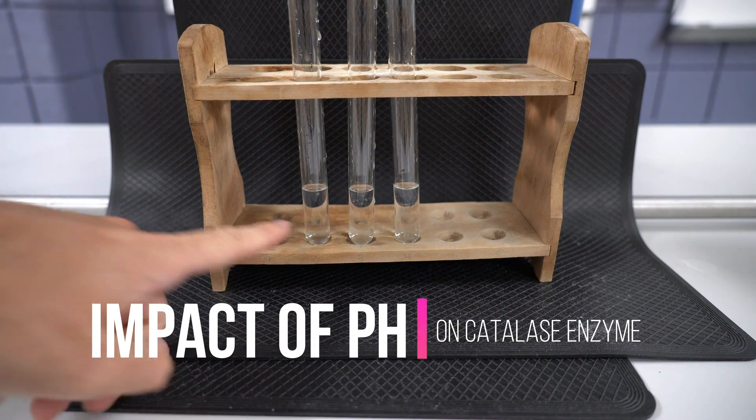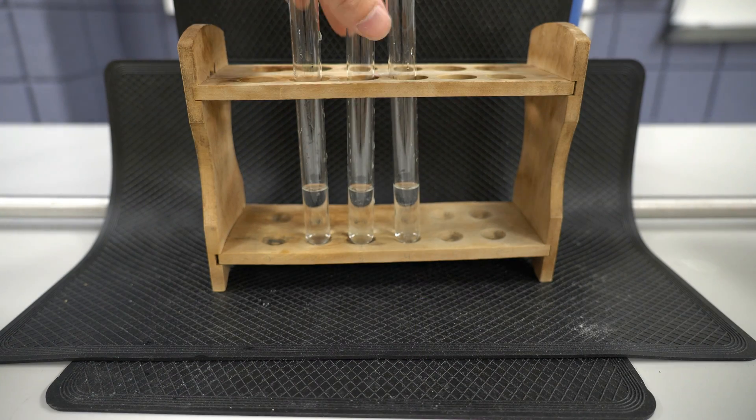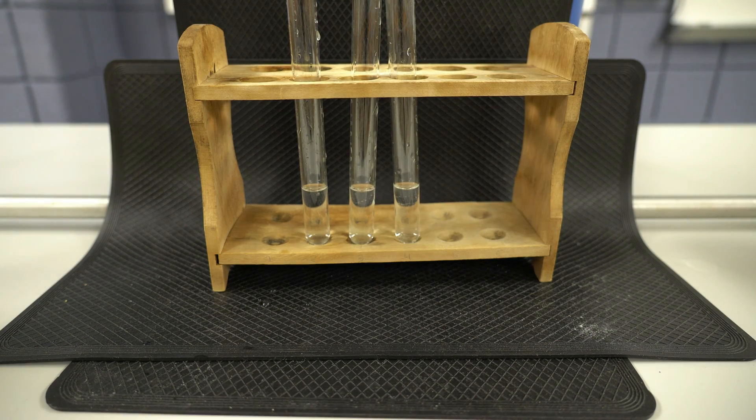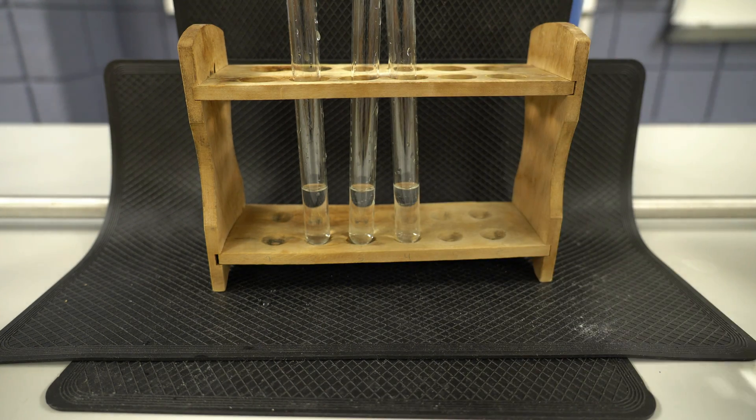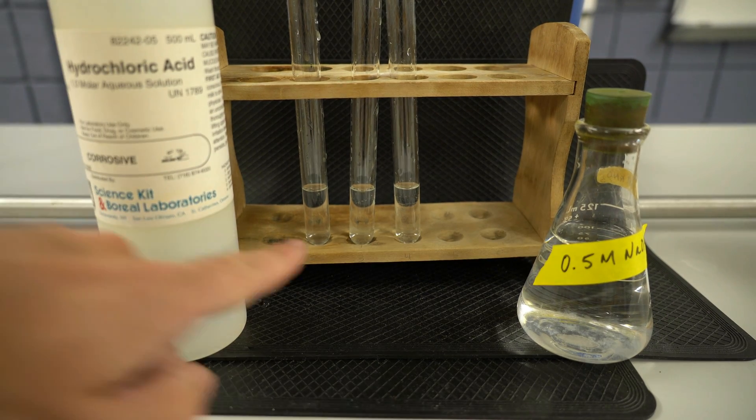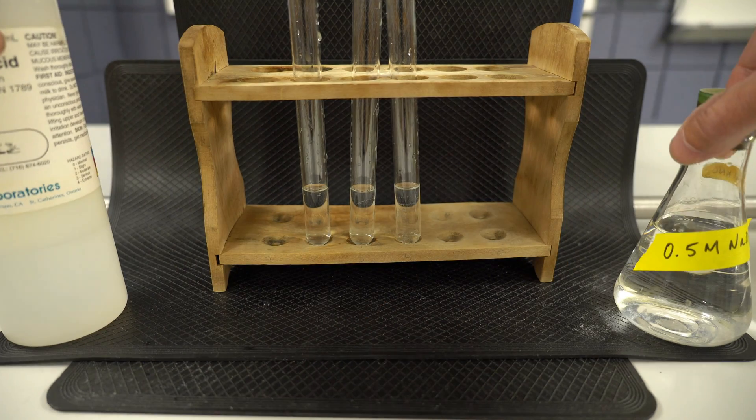So we're looking at pH. In the first test tube, I've added hydrochloric acid. This middle one is regular tap water, very neutral pH. The last one has had sodium hydroxide added to it. We're increasing pH from a very low pH to a neutral pH to a basic pH.